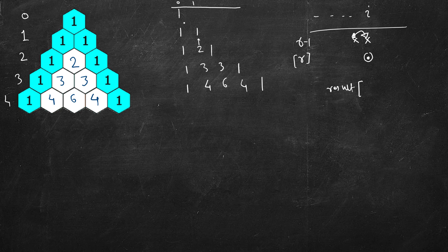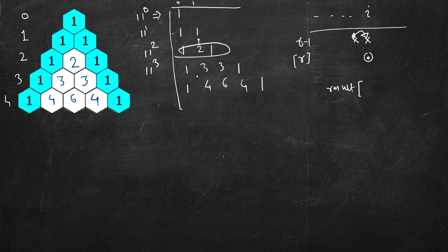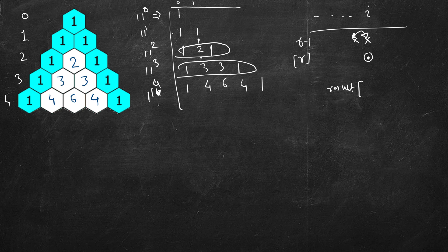Another thing to notice: each row corresponds to powers of 11. Row zero is 11 to the power 0 = 1, row one is 11 to the power 1 = 11, row two is 11 squared = 121, row three is 1331, row four gives this number. However, the row index can be up to 33.